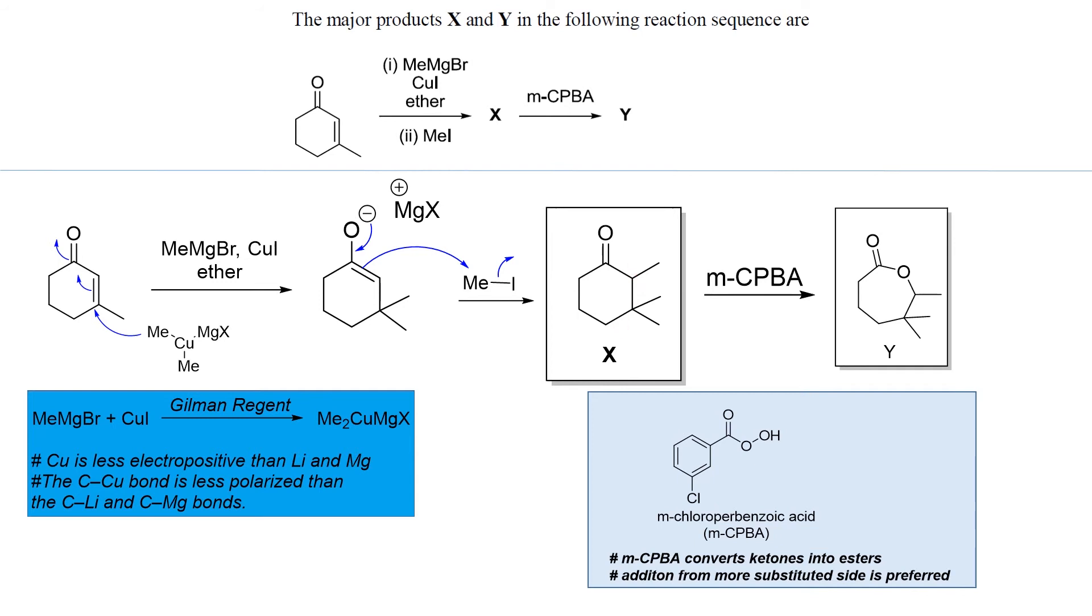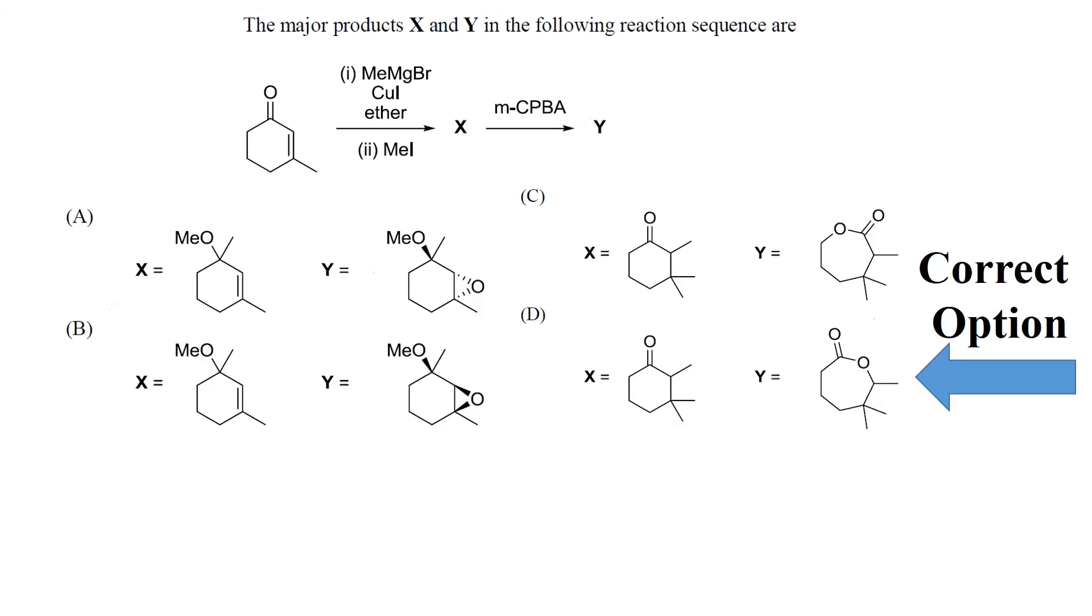So let's see which option is correct. So it was D. Here we can clearly see that D, it was the D option that was the correct option. So this is how you have to approach such questions.